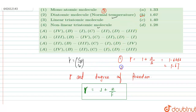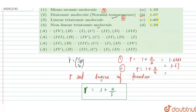For the diatomic molecule at normal temperature, the degree of freedom is six. So gamma is equal to one plus two by six, which equals 1.333, approximately 1.33. The answer for this option corresponds to option D.